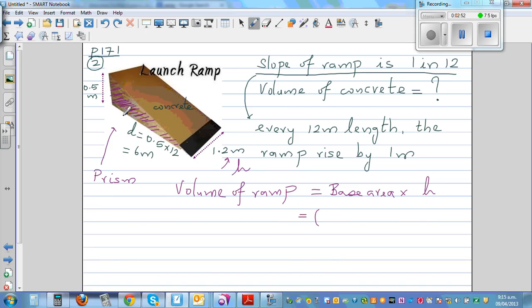This is your base: base is 6 meters, and height is 0.5 meters. I like to write the formula like this: base times height, which is 6 meters times 0.5 meters, divided by 2. This is the area of the triangle.